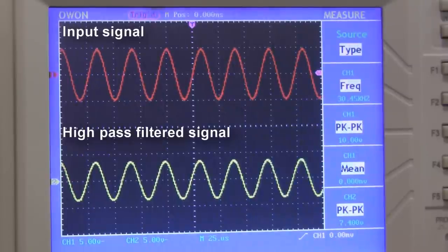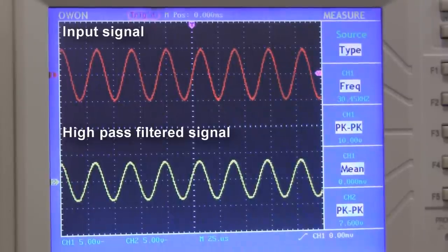At 30 kHz, the output is roughly 29% less than the input, which is about what we expected because that's the cutoff frequency.